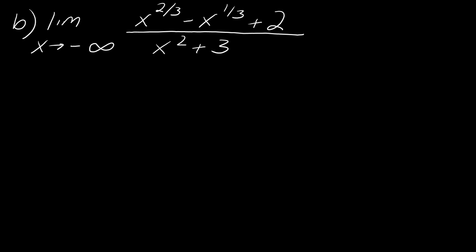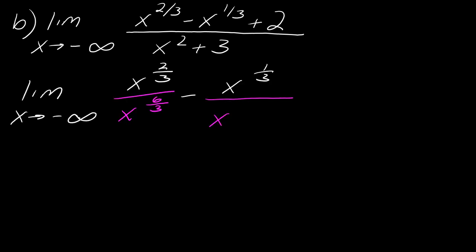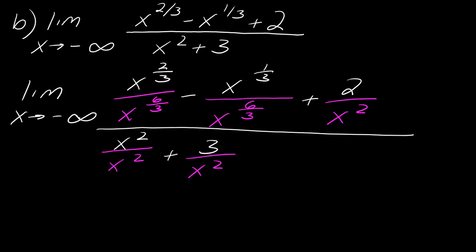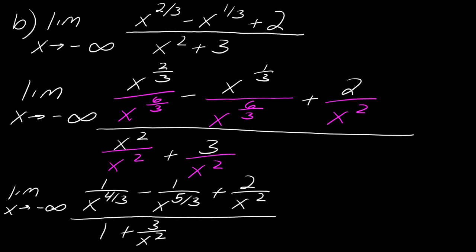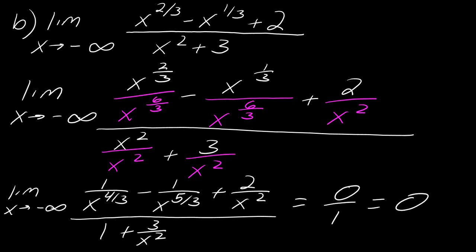The next example still uses the same idea even with rational exponents — you still divide by the highest power. The highest power here is x squared. One thing to note: I rewrote x² as x to the 6/3, which is the same thing, but it helps to think through the math with rational exponents more easily. Working through this, the whole top goes to zero, the part with x in the denominator goes to zero, but the constant term goes to one. So at the end of the day this is zero over one, and the limit is just zero. Nothing special about rational exponents — you just have to think through the fractions.